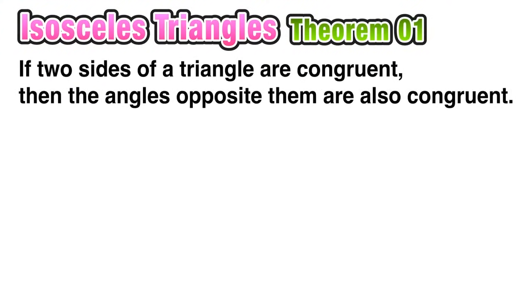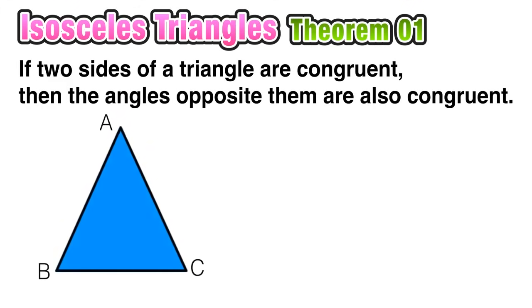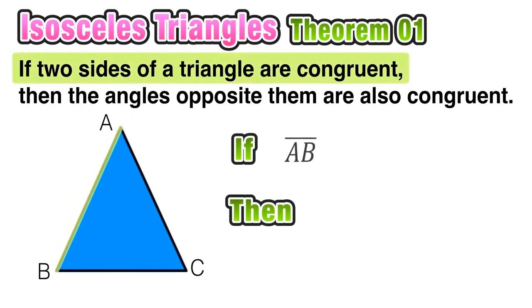Now we're ready for our first isosceles triangle theorem, which says that if two sides of a triangle are congruent, then the angles opposite them are also congruent.